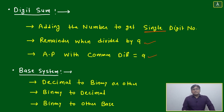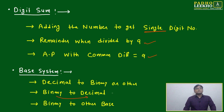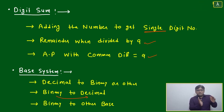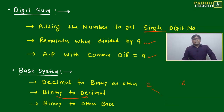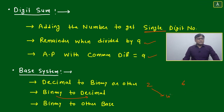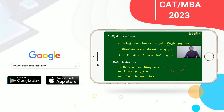After that comes the base system. Recently, questions have been asked on base conversions — decimal to binary, binary to decimal, or binary to other bases. You may also encounter questions about what happens to the number of digits when changing bases: if the number of digits decreases, is the base increasing or decreasing? When converting from base 2 to base 6, the easiest approach is to first convert binary to decimal, then decimal to base 6. Shortcut techniques can also be applied.